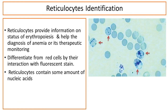Reticulocyte identification: reticulocyte parameters provide information on the status of erythropoiesis, helping in the diagnosis and therapeutic monitoring of anemia. Reticulocytes are differentiated from other red cells by their interaction with fluorescent stain, because reticulocytes contain some amount of nucleic acids.